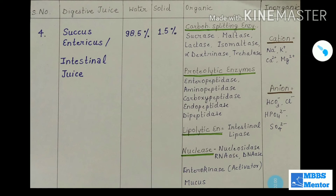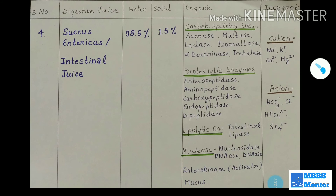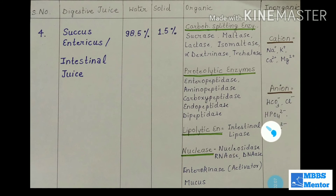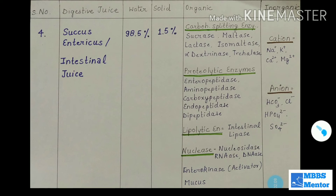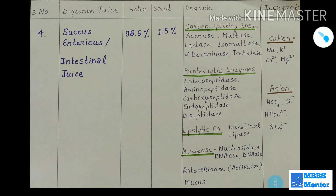Cations in intestinal juice are sodium, potassium, magnesium, and calcium. Anions are bicarbonate, chloride, HPO4²−, and SO4²−.